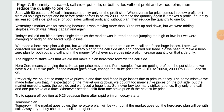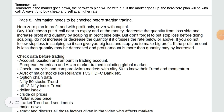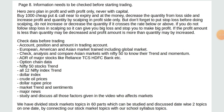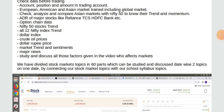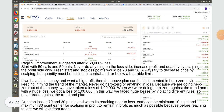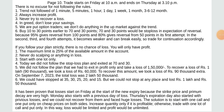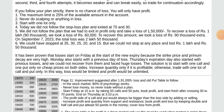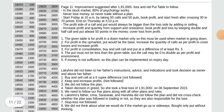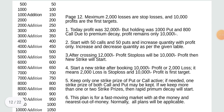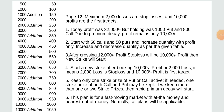7. If quantity is increased on the call side, put side, or both sides without profit and without plan, then reduce the quantity to one lot. 8. Information needs to be checked before starting trading. 9. Improvements suggested after 2,50,000 loss. 10. Trade starts on Friday 10 AM and ends on Thursday at 3:10 PM. 11. Improvements suggested after 1,91,000 loss and all put table to follow. 12. Maximum 2,000 losses are stop losses and 10,000 profits are the first targets.